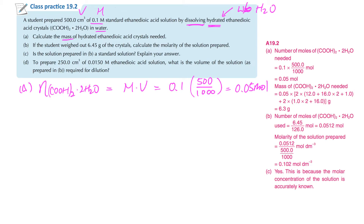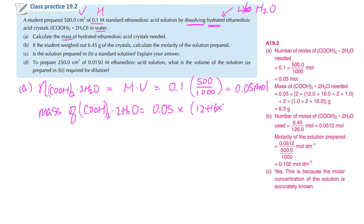After you get the moles, you have to calculate the mass. Mass of (COOH)₂·2H₂O equals number of moles times molar mass, which will be [12 + 16×2 + 1×2] plus [18×2]. Remember this is a plus sign for the water of crystallisation - put a square bracket for that. So the mass required would be 6.3 grams.